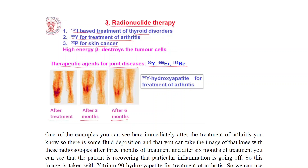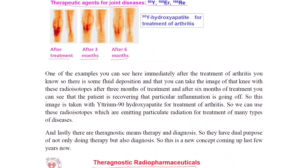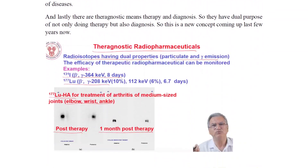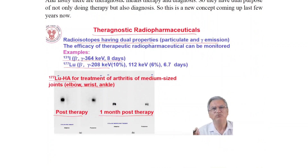Radionuclide therapy includes 131I-based treatment of thyroid disorders, 90Y for treatment of arthritis, and 32P for skin cancer. High-energy beta radiation destroys tumour cells. Theragnostic radiopharmaceuticals are radioisotopes having dual properties — particulate and gamma emission.